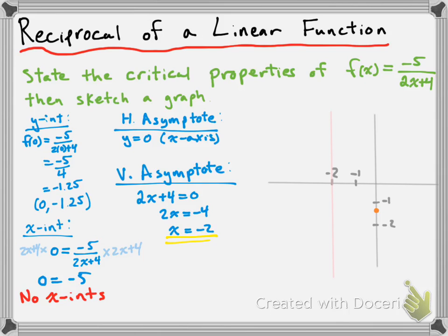To the right of our vertical asymptote, we want to consider whether the function is going to be above or below the x-axis. It can't be partly above and partly below because that would create an x-intercept, and we know there are none. We already have a point to the right — our y-intercept — so the function is below the x-axis on the right side.